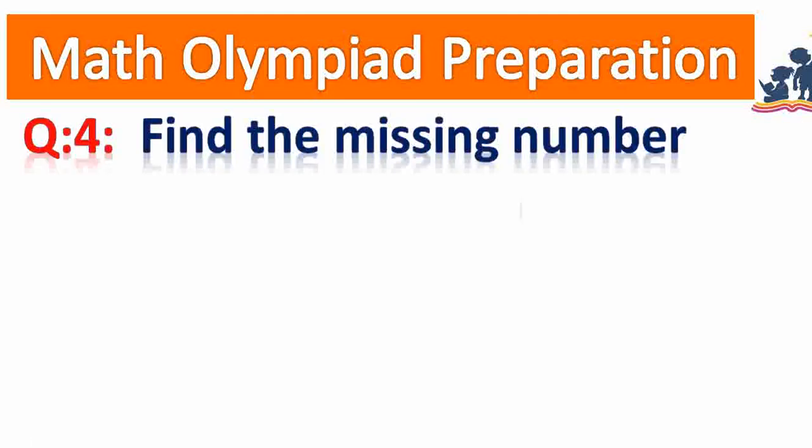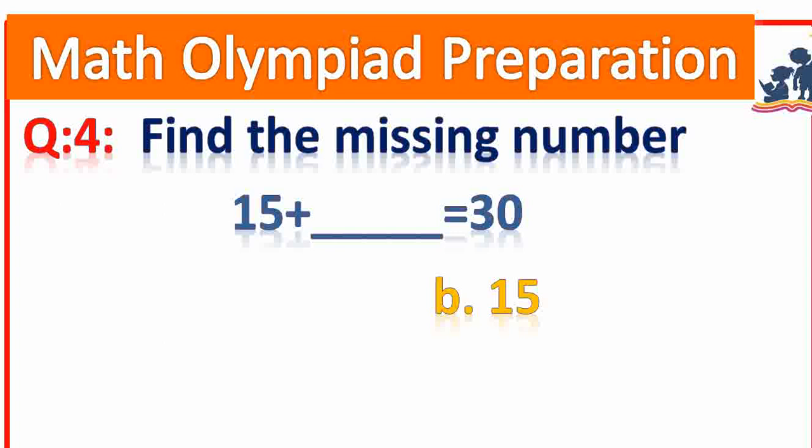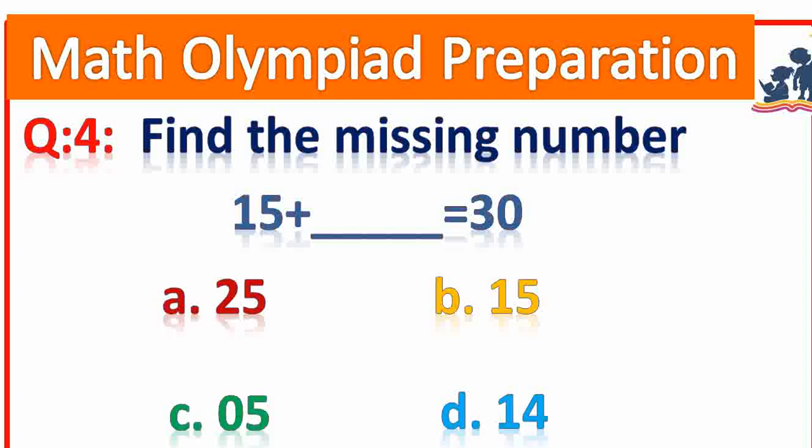Question number 4. Find the missing number: 15 plus dash is equal to 30. Answer: 15. Good.